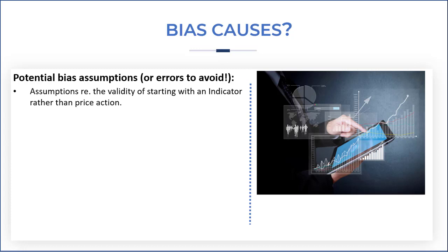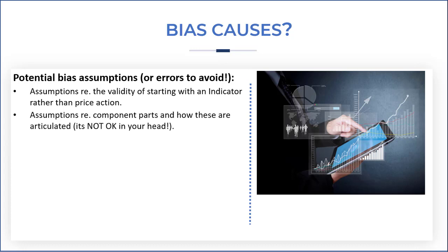First, there are assumptions about the validity of starting with an indicator rather than price action. Every new system or strategy should start with a specific price action that you're seeing and want to optimise. Then we add clues such as indicators to give us a higher probability. We don't start with a moving average cross — we start with the idea of a trend reversal, for example.